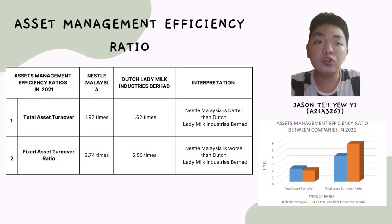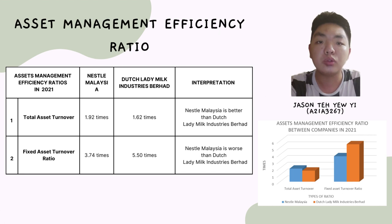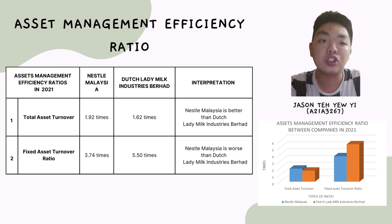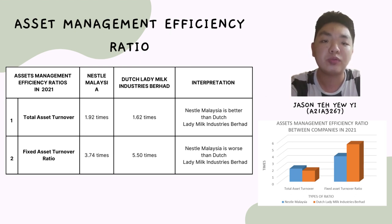My name is Jason David, my number is 821-82277. In this presentation, we compare the asset management efficiency ratio of Nestlé Malaysia and Dutch Lady. Nestlé Malaysia has a higher total asset turnover of 1.92 times compared to Dutch Lady's 1.62 times, indicating superior ability to generate revenue from total assets. However, Dutch Lady leads in fixed asset turnover ratio with 5.5 times compared to Nestlé's 3.74 times, showing better utilization of fixed assets for revenue generation. This ratio provides valuable insight into the company's asset efficiency and operational performance.